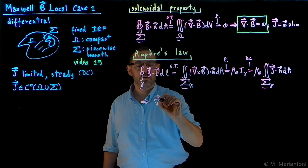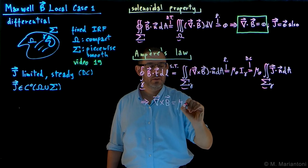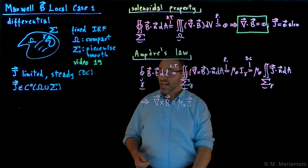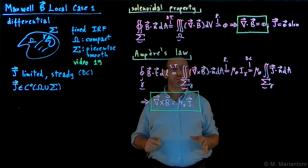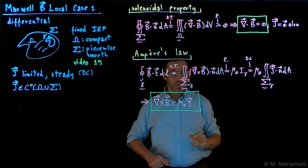That the curl of B has to be equal to mu naught J, which is the differential form, that is local form, case 1, for the magnetostatic field B, Ampere's law. We will actually summarize all this in a table at the end, comparing to the electrostatic field case. So these are Maxwell's equations in differential form, case 1, for the magnetostatic field B.